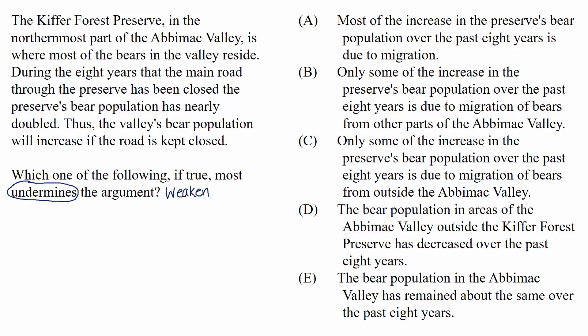So the passage reads: the Kifer Forest Preserve in the northernmost part of the Abamek Valley is where most of the bears in the valley reside. During the eight years that the main road through the preserve has been closed, the preserve's bear population has nearly doubled. Thus, the valley's bear population will increase if the road is kept closed.